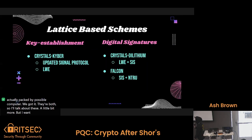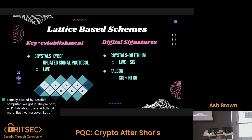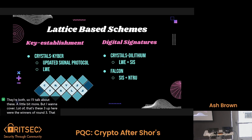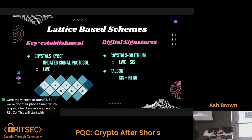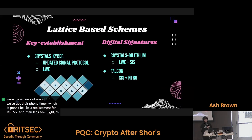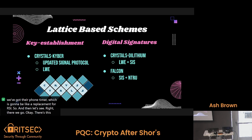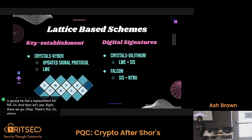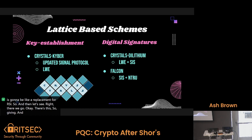These three up here were the winners of round three. We've got CRYSTALS-Kyber, which is going to be like a replacement for RSA sort of. And then CRYSTALS-Dilithium and Falcon — those are like digital signatures. CRYSTALS-Kyber is also used on top of Signal. Both CRYSTALS-Kyber and Dilithium use module lattices, which I will vaguely cover in a little bit. And then Falcon uses NTRU lattices. NTRU is another algorithm that is lattice-based.